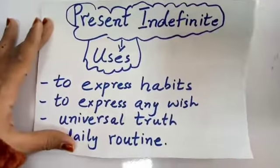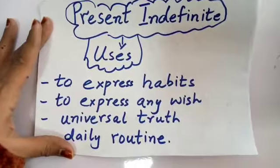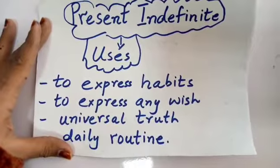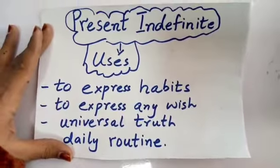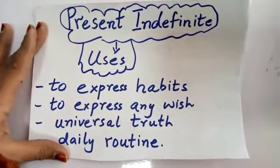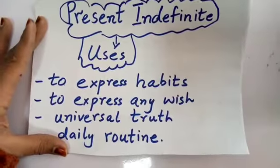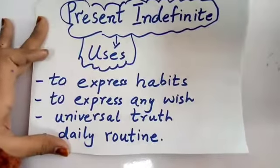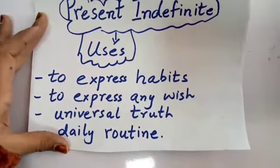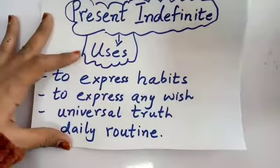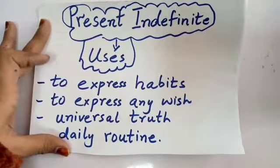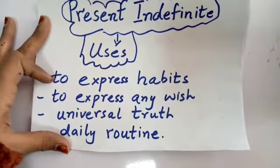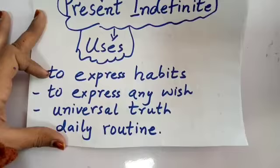Today we will study when we use present indefinite tense — yani hume kab use karna hai. Sometimes you want to make a sentence but you don't know which tense to use, so we should know the uses. Present indefinite tense is used to express habits — humari jo aadatein hoti hain unko batane ke liye.